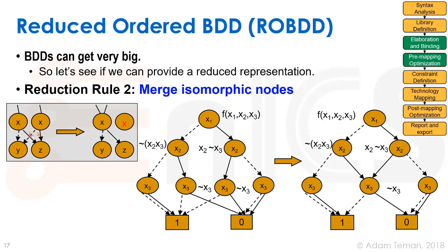Looking at our diagram, we can see that two x3 nodes are isomorphic: both have x3=0 going to 1 and x3=1 going to 0. We can merge them — take both x2 nodes' arcs to point to this single x3, then erase the duplicate x3 and its arcs. After merging, both x2 nodes share one x3 node. Instead of having four nodes at that level, we now only have three, reducing the size of our BDD.